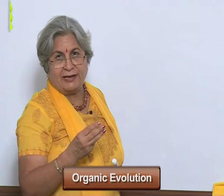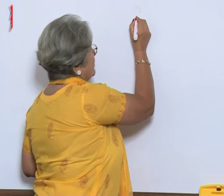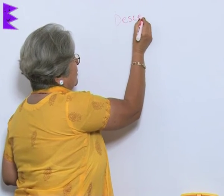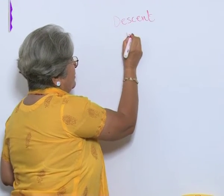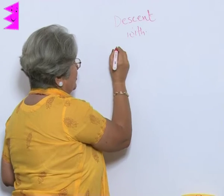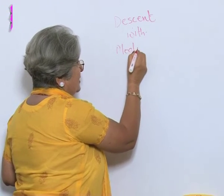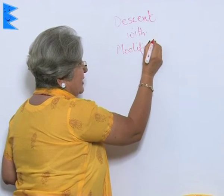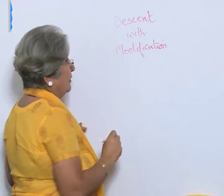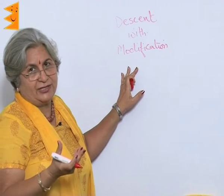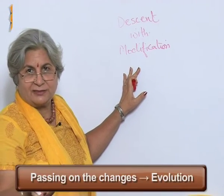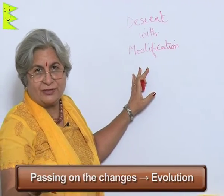How to define organic evolution? It sounds vague, but it is not. We can define it in just three words, and these three words are 'descent with modification.' Descent means going down and modification means change. So, passing on the changes — that is what leads to evolution.